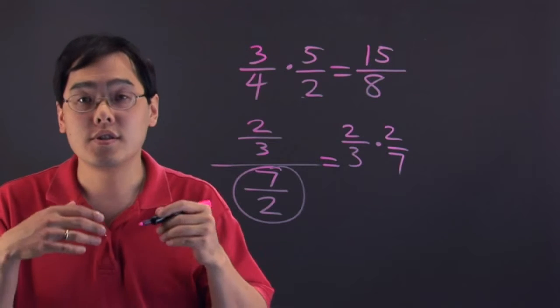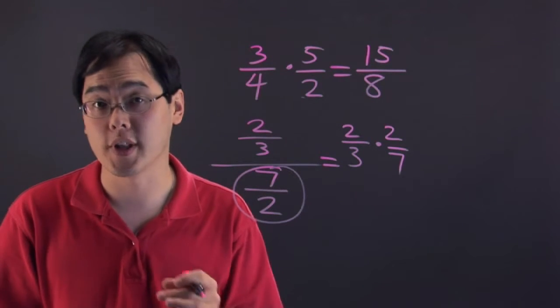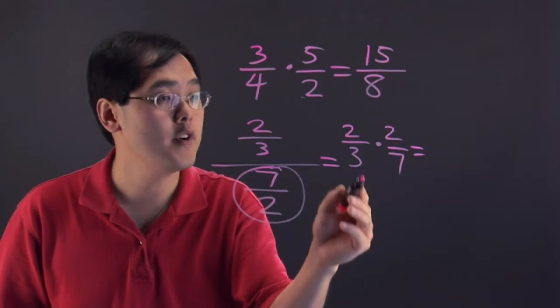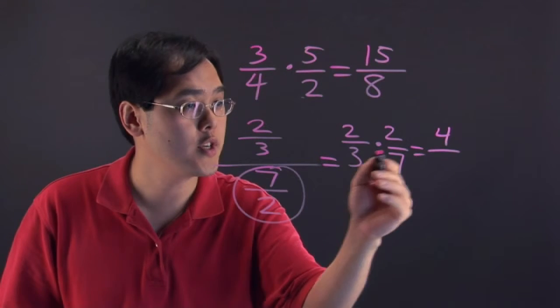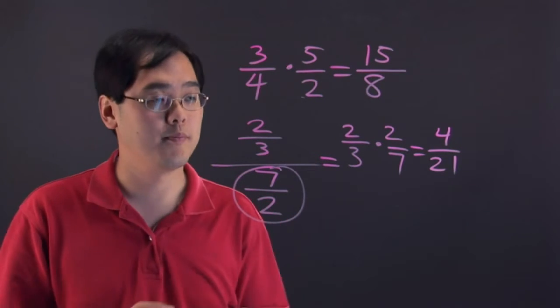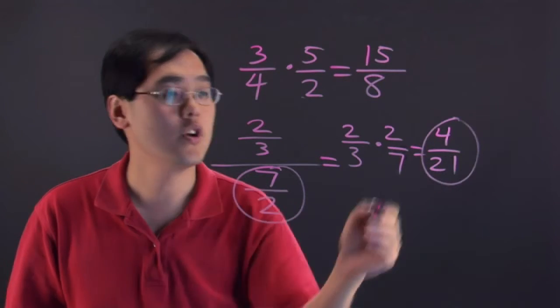Dividing fractions is actually another multiplication exercise, so there's a very close relationship there. What you do simply is, like we did above, multiply across. 2 times 2 is 4, 3 times 7 is 21. So 2/3 divided by 7/2 gives you 4/21.